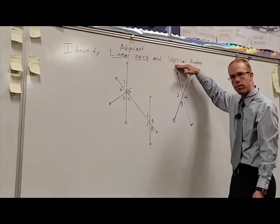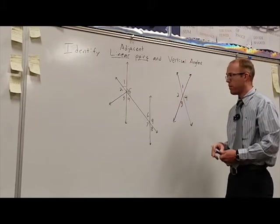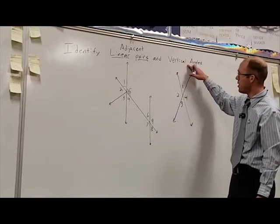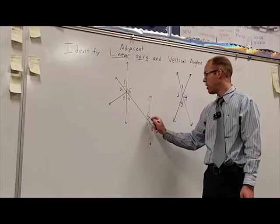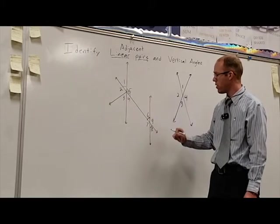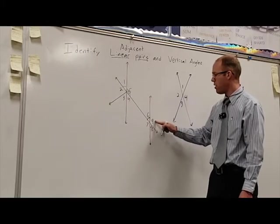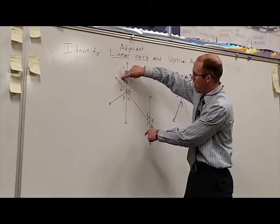Later on, we'll talk a little bit more about vertical angles and see that they're congruent to each other, but that is a topic for another time. Right now, we just need to identify them. So a few from this picture, we can see six and eight. Those are vertical angles because we have the two crossing straight lines. Seven and nine are also a pair of vertical angles. Right here, we've got one and four.